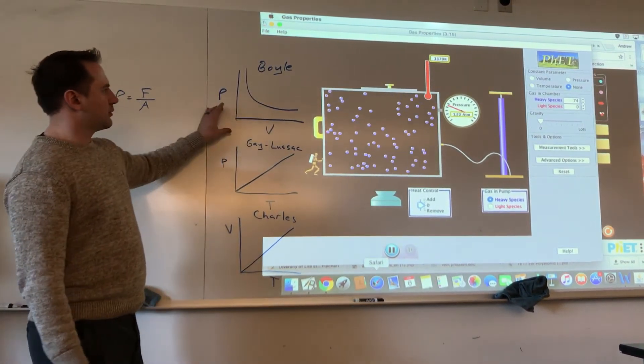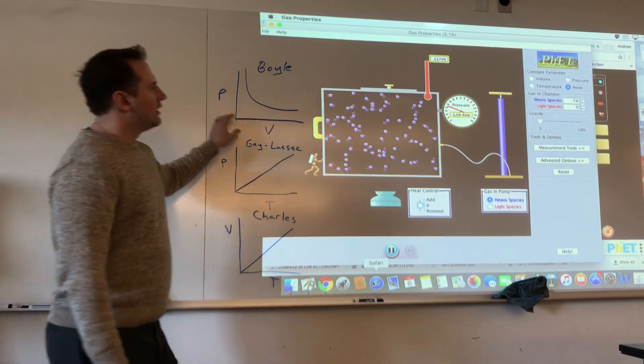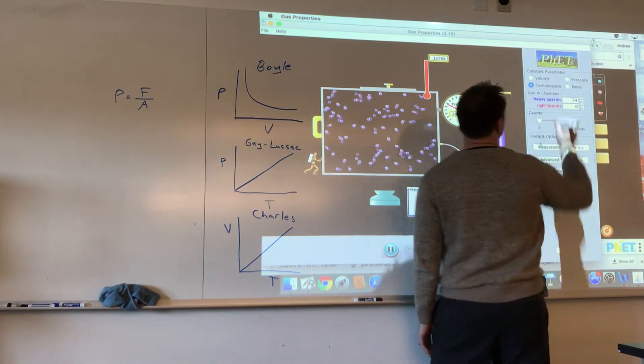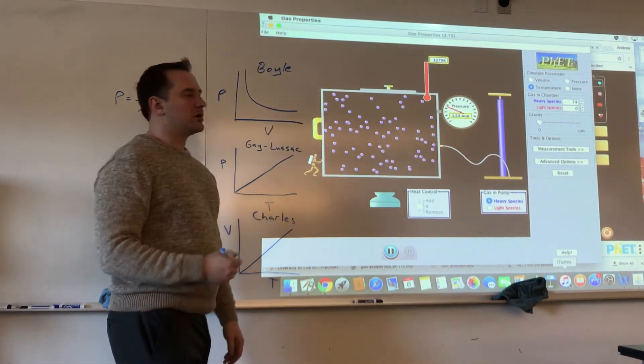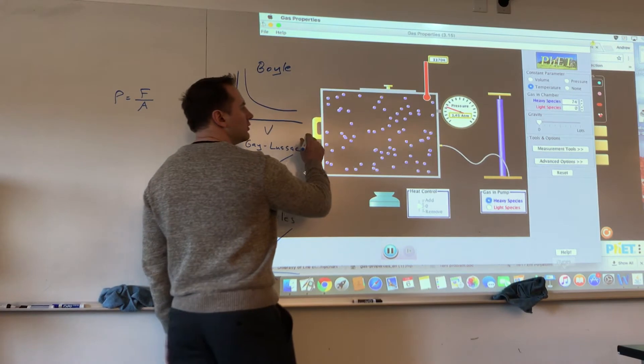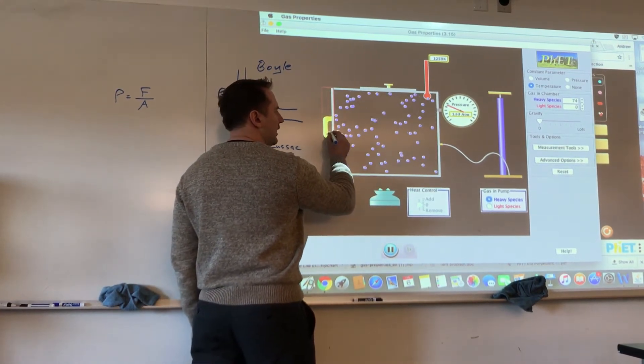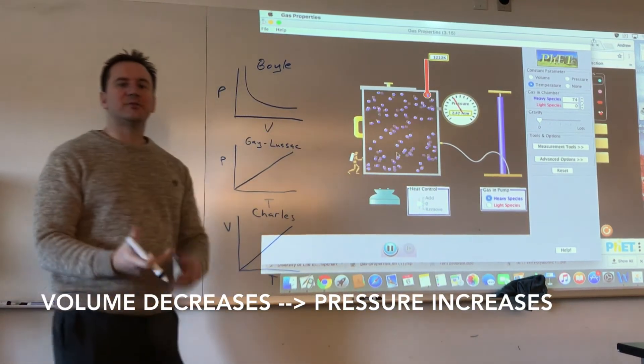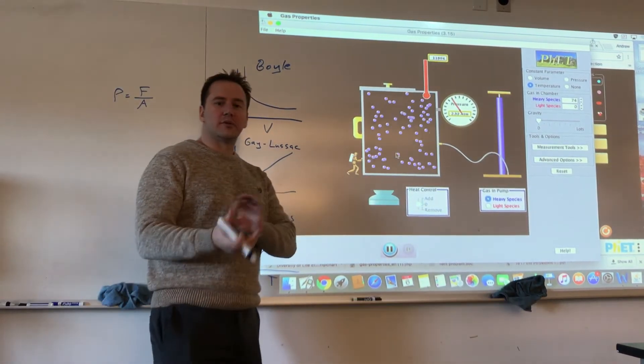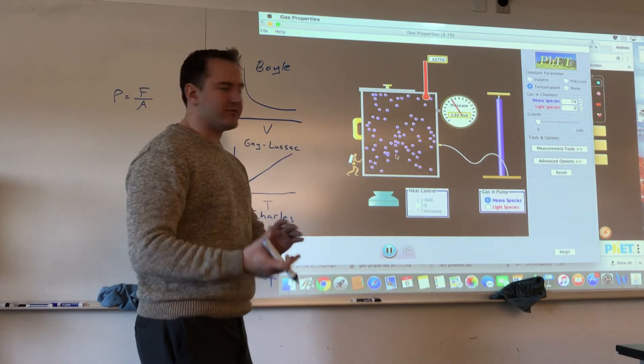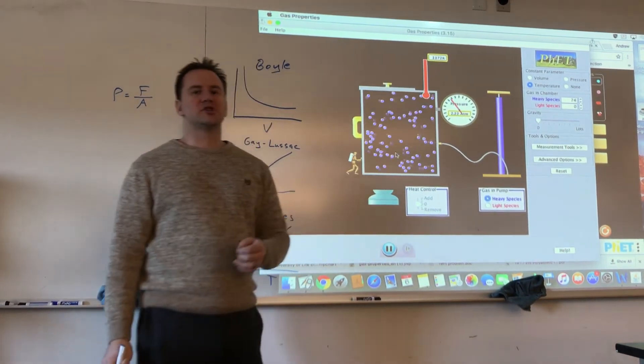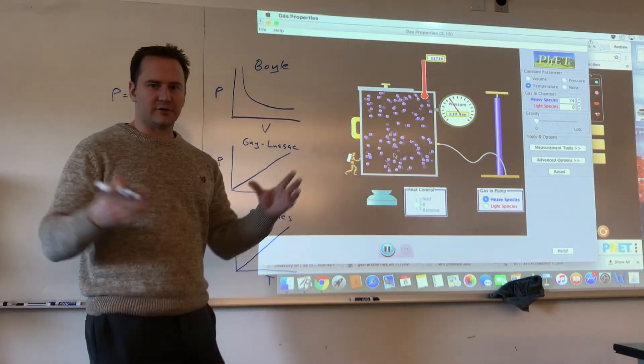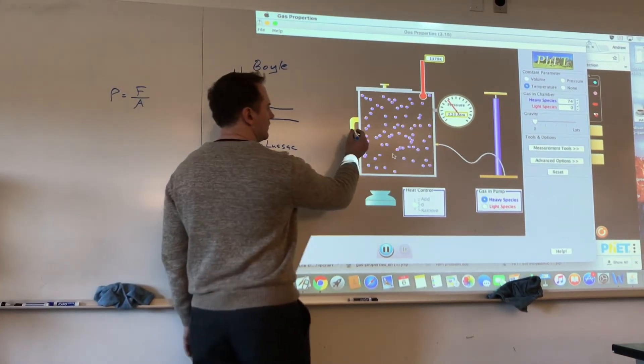So the first one I'm going to look at is pressure and volume. So if I hold the temperature constant and I were to compress this container the volume is going to go down and as that happens you can see the pressure gauge goes up. That's because the collisions, while the molecules or the particles are still moving at the same average speed and having the same force, the collisions with the walls are happening much more frequently now as a result of the decreased surface area that's being applied over.